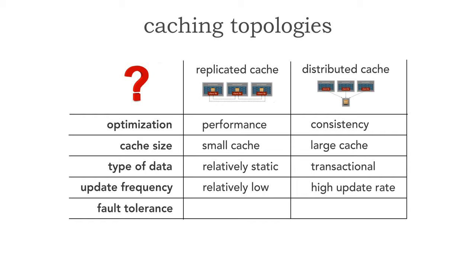Related to data type is update frequency. Even if data is transactional, relatively low update rates are still well suited for a replicated cache because it can usually keep up and maintain high consistency. However, at a high update rate, replicated caching can rarely keep up, resulting in data collisions — stale data reads. So for high update rates, the distributed cache is usually a better choice. For example, a product service keeping inventory counts in cache is better served by a distributed cache, because a replicated cache may incorrectly show stock as available when it's already been taken.